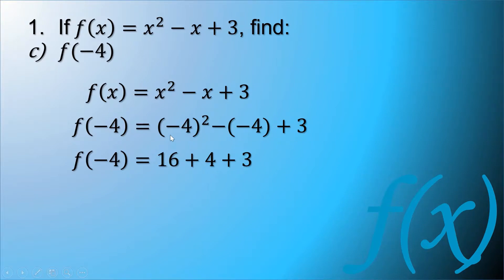Negative 4 squared is equal to 16 because negative 4 times negative 4 is positive 16. So minus negative 4, negative times negative is equal to positive. So our 4 will become positive plus 3. So this equation results to function of negative 4 is equal to 23.